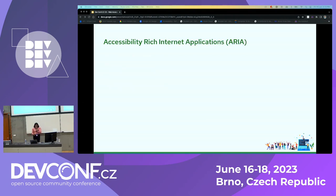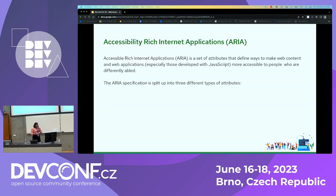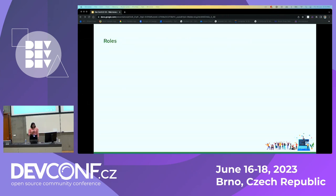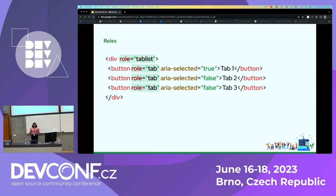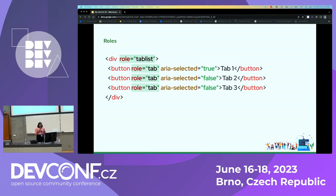Now let's move on to ARIA — Accessible Rich Internet Applications. ARIA is a set of attributes used to enhance the accessibility of an application. There are three types of attributes: roles, states, and properties. Roles are used to define the purpose and meaning of elements that are not native HTML elements or are not properly supported by browsers. For example, if we create a tab list using buttons, we use an ARIA role so the screen reader understands it as a tab and not a button.